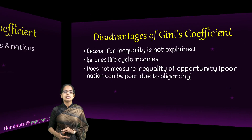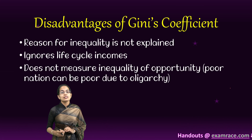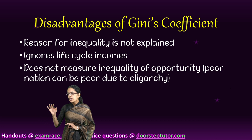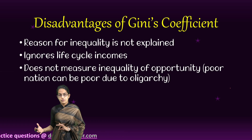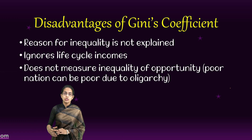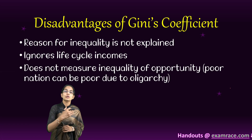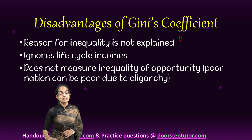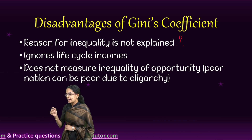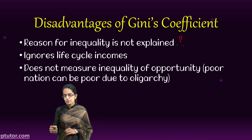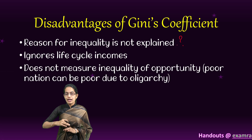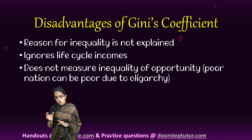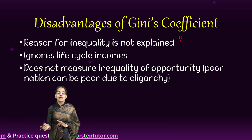The Gini coefficient does come with certain disadvantages. First, we can explain that inequality exists in the society, but we cannot explain why. The inequality could be due to unequal distribution of wealth, accumulation by a certain segment, corrupt policies, or government policies — the reasons are not explained. Additionally, it ignores life cycle events: a person's income changes throughout life, and those individual income changes are not considered under the Gini coefficient.